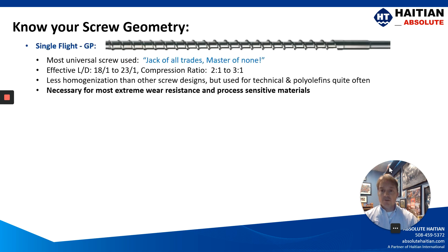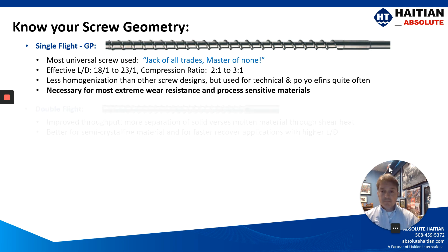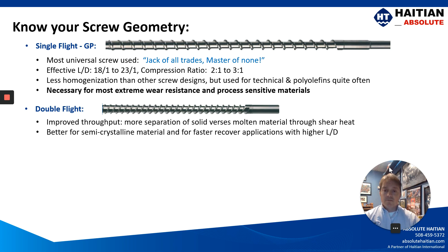Know your screw geometry. Most machine suppliers are going to supply a general purpose screw unless you specify otherwise. This is a jack of all trades but master of none — it gives you less homogenization on your material. It's often used in technical and polyolefin applications, but it's the necessary screw geometry for high wear resistant materials. You might also see a double-flighted screw, which is very similar to a GP screw but with double the number of flights, giving you more throughput by separating the solid versus the molten material.